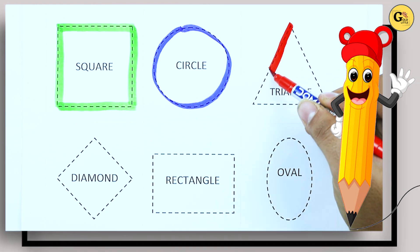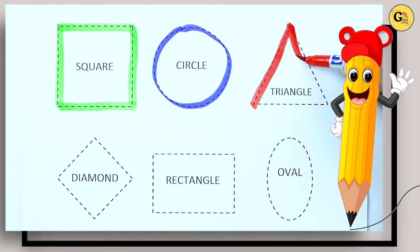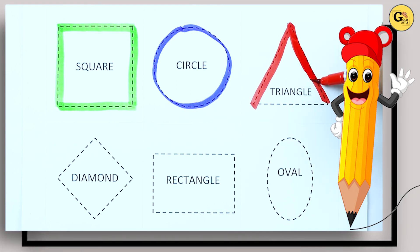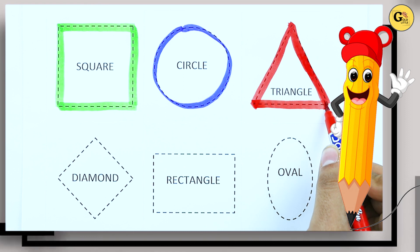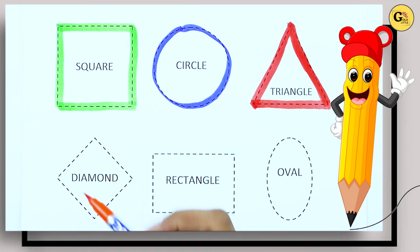One line, two line, two sliding line. It's a two sliding line and one slipping line. It's a triangle with red color.